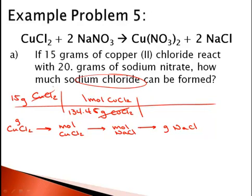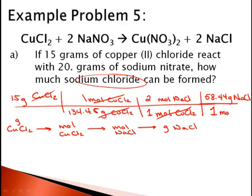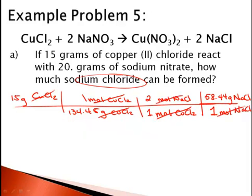Grams of copper II chloride cancel out. For our molar ratio, we look at our balanced equation. We want sodium chloride, so we put moles of NaCl on top and moles of copper II chloride on the bottom. From the balanced equation, there are 2 moles of NaCl and 1 mole of copper II chloride. The molar mass of sodium chloride is 22.99 plus 35.45, which is 58.44 grams per mole. So I take 15 divided by 134.45, times 2, times 58.44 — with 15 grams of copper II chloride, I can make 13 grams of NaCl.